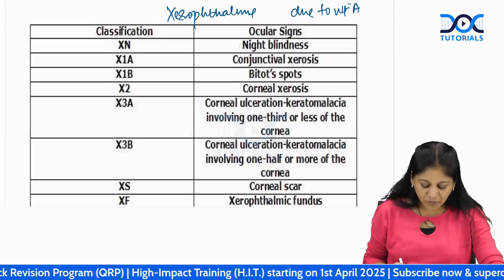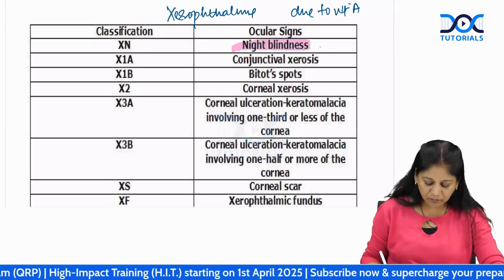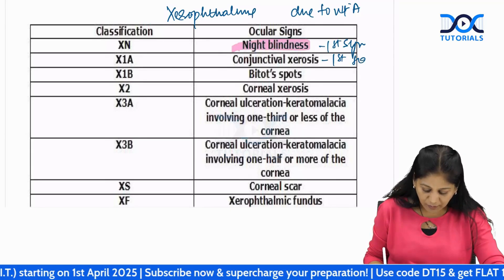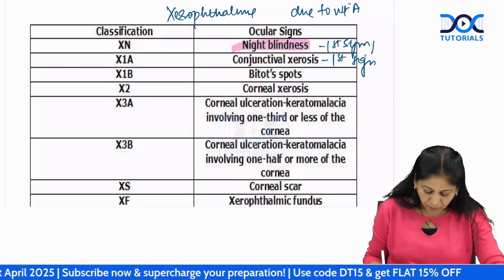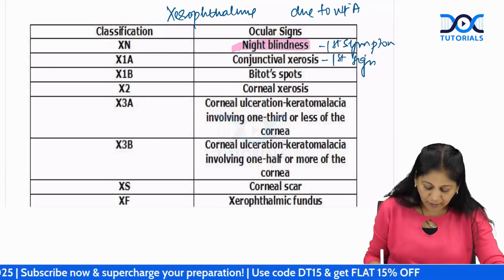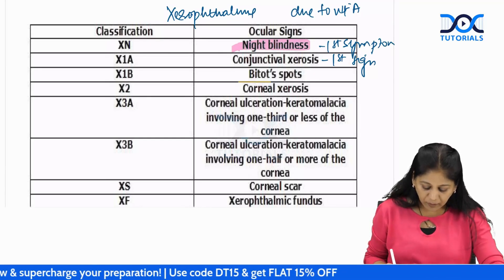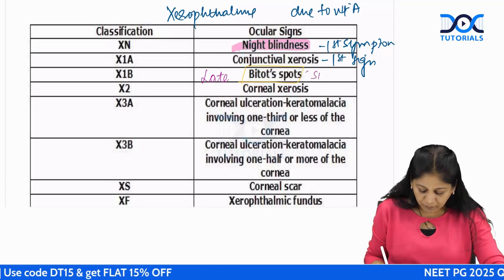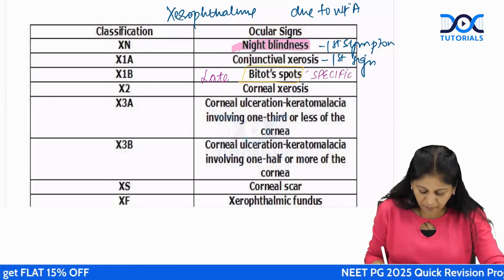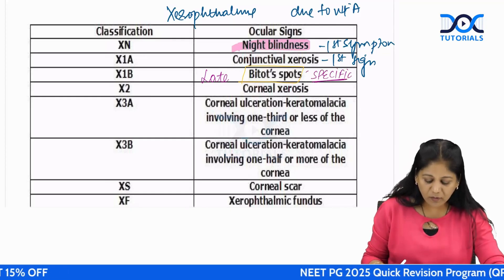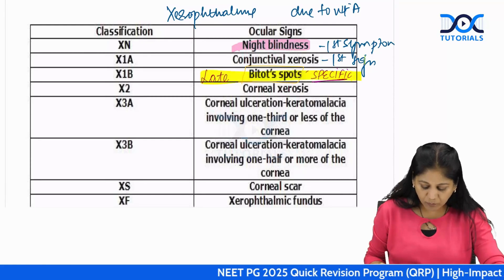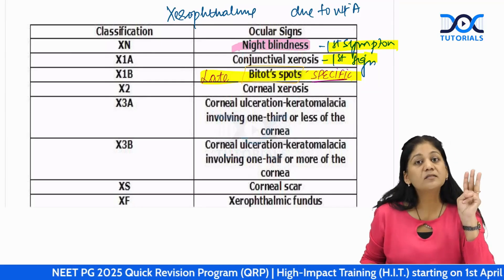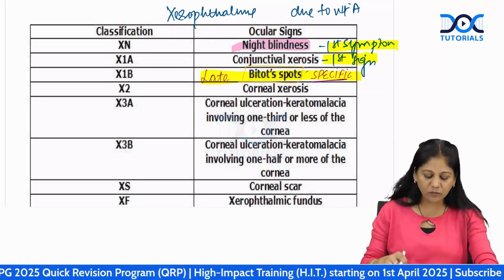The first symptom of xerophthalmia is night blindness. The first sign is conjunctival xerosis. Bitot's spot is a late sign, but it is a very specific sign. These are important distinctions: first symptom, first sign, specific sign.